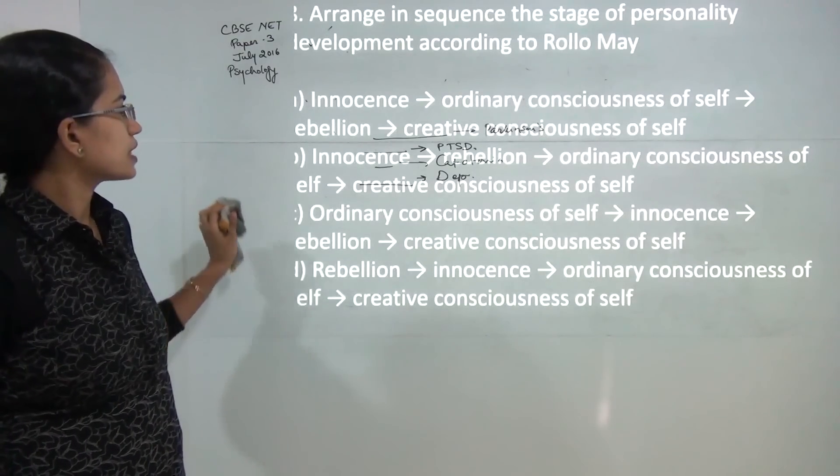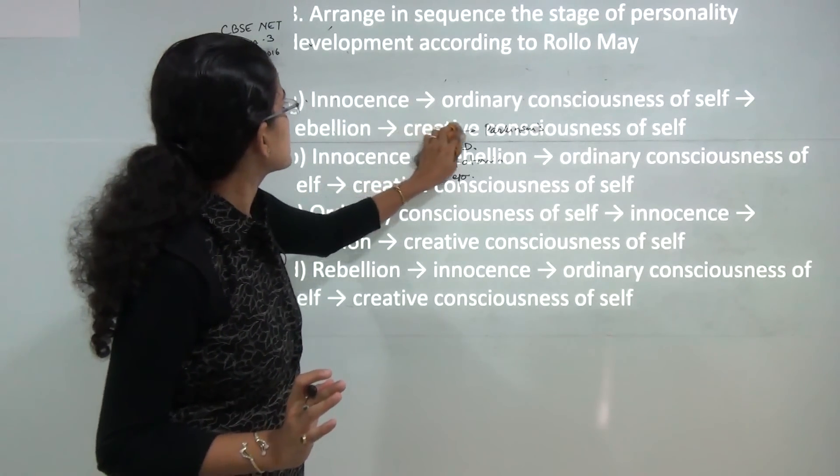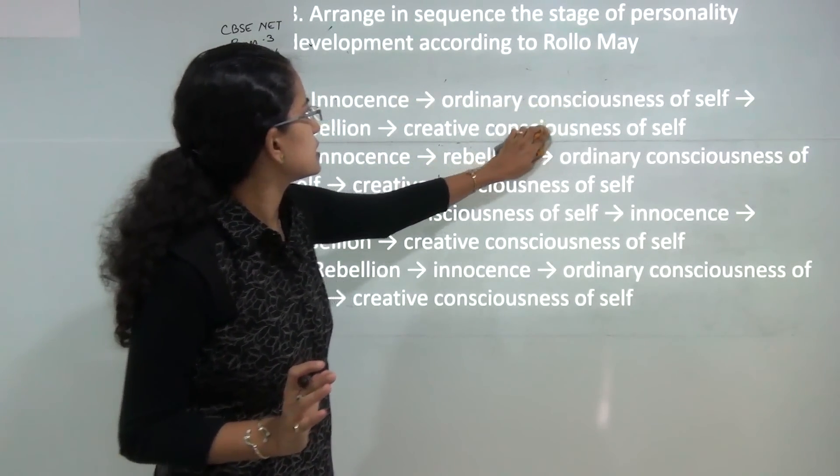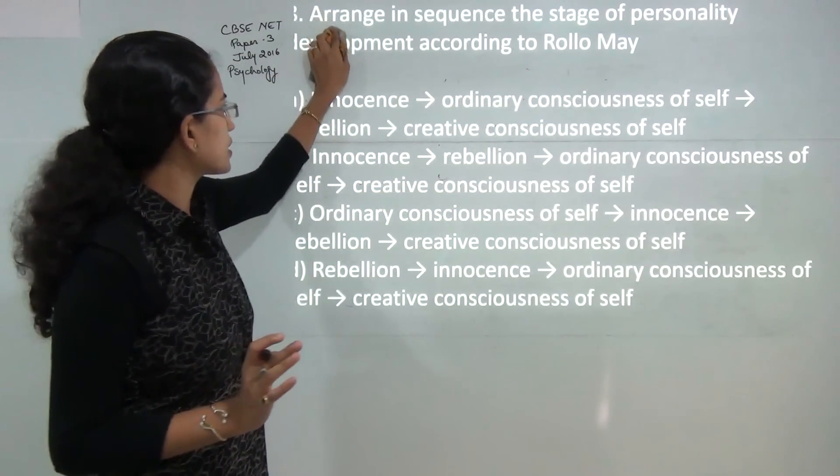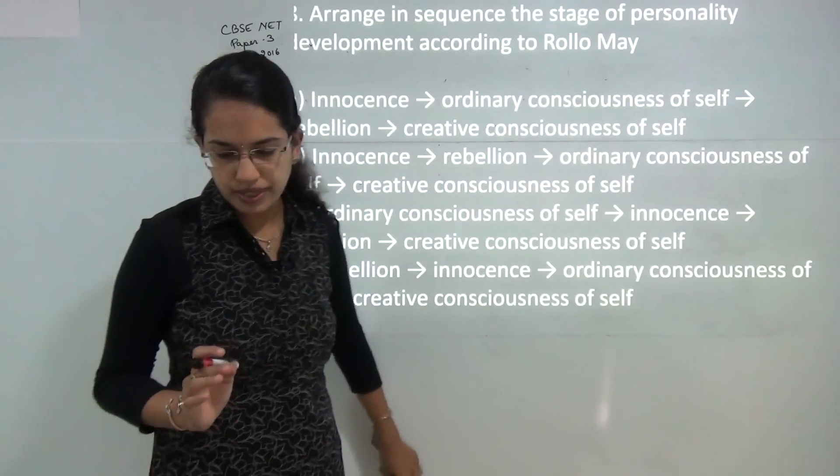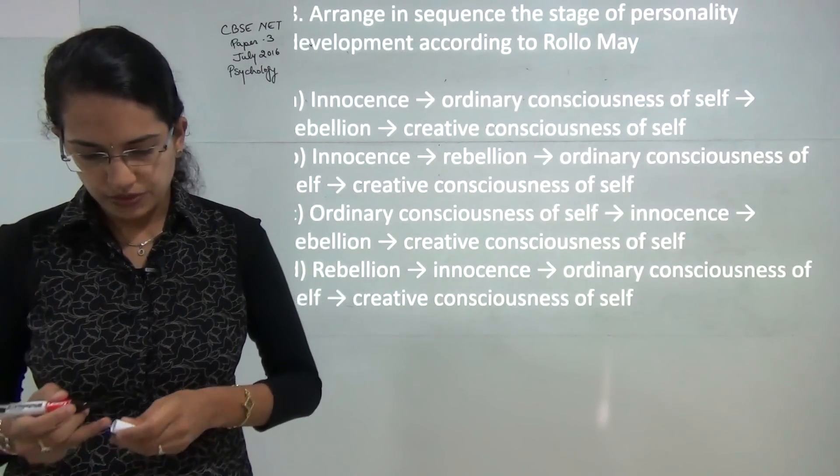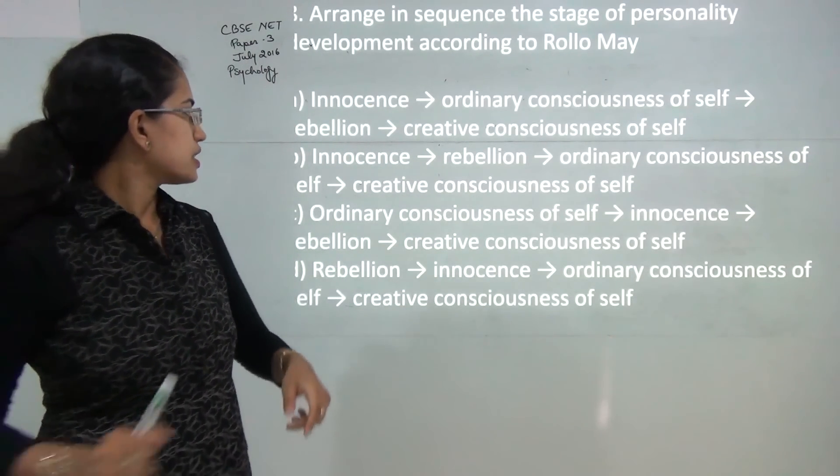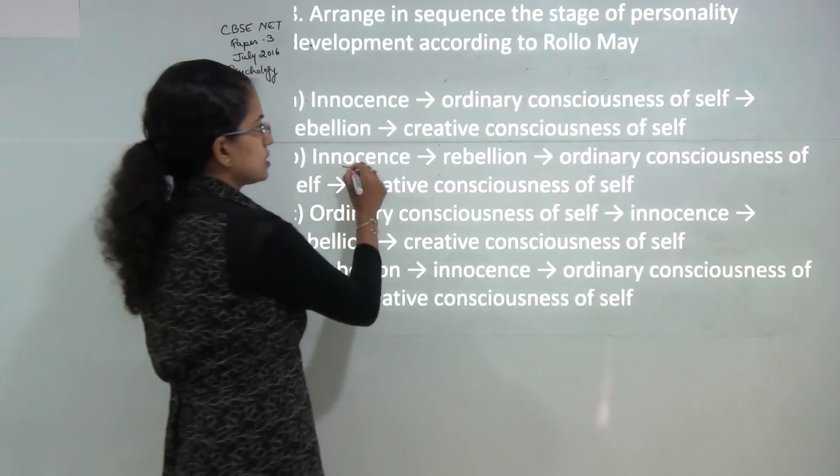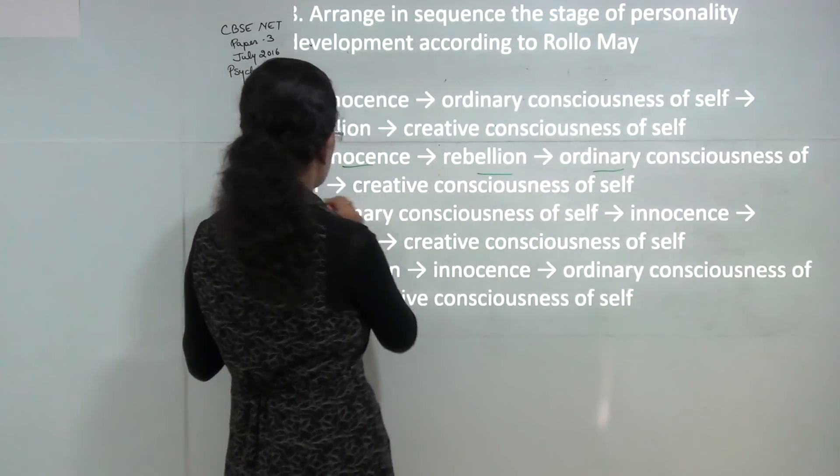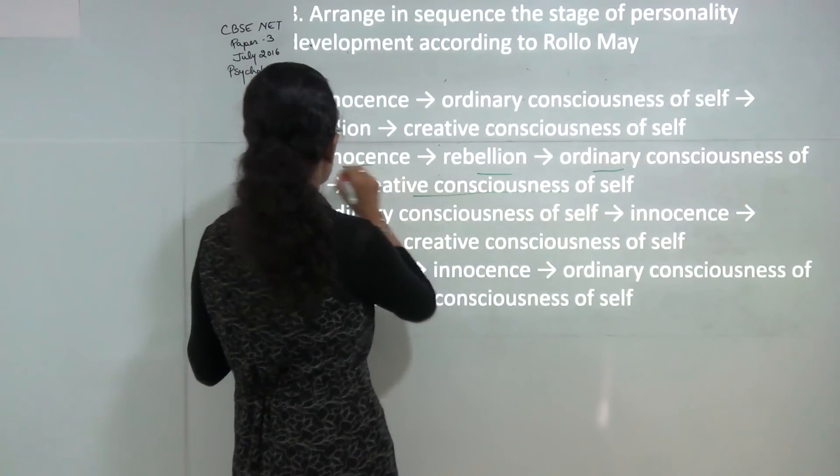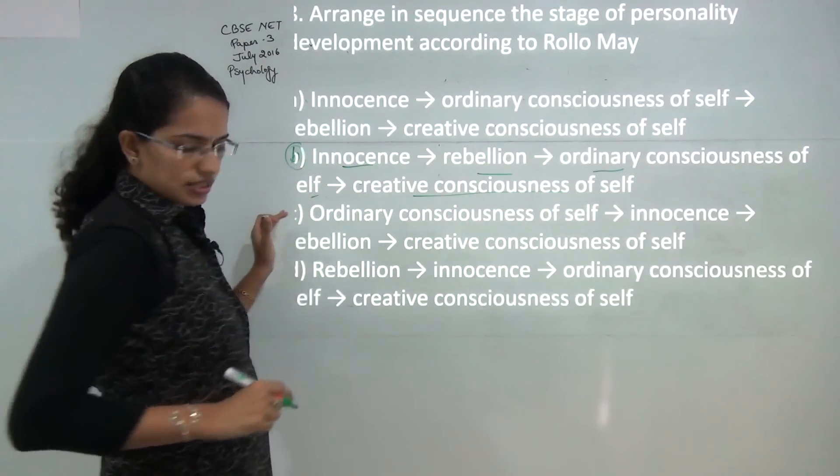Next: what would be the correct stages of personality development according to Rollo May. Rollo May's personality development theory talks about the correct stages as innocence, rebellion, ordinary consciousness of the self, and creative consciousness of the self. So B would be the correct option here.